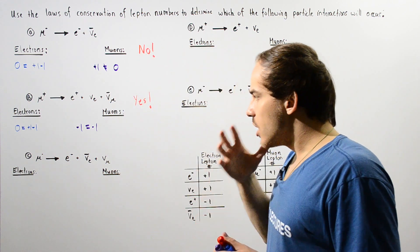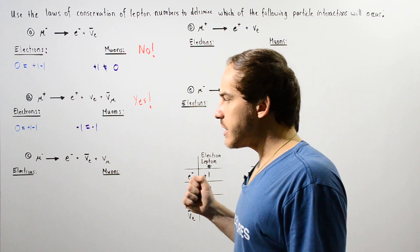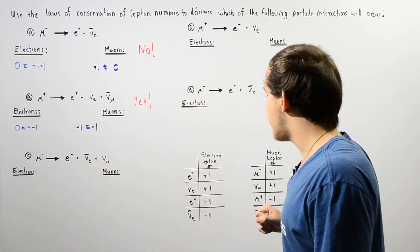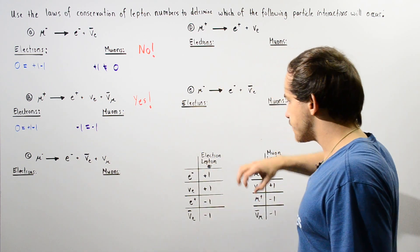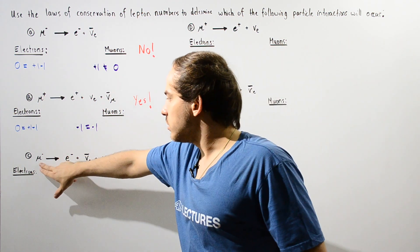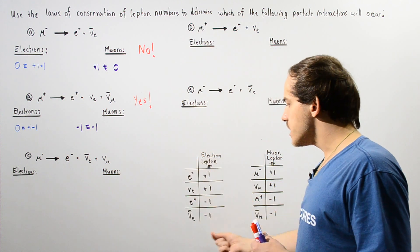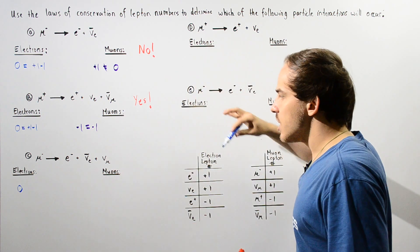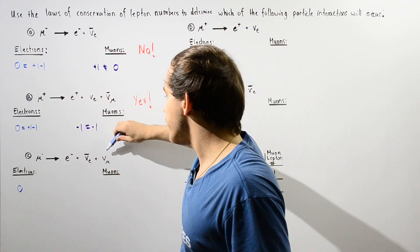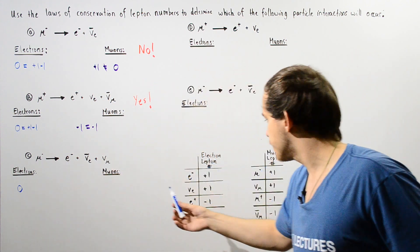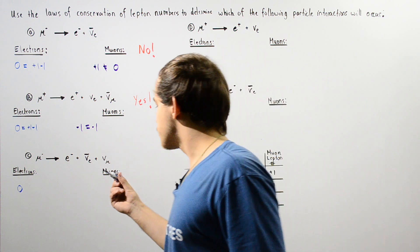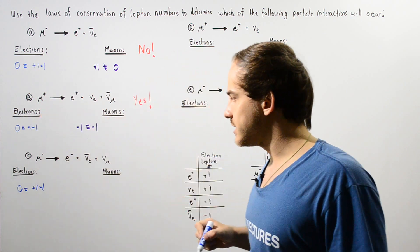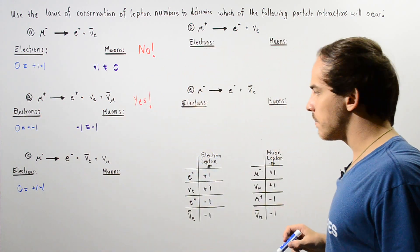What about reaction C? In C, the muon decays into an electron, a muon neutrino, and an electron anti-neutrino. Let's begin with the electron lepton number. On the left side, we have none of these particles, so the left side gets zero. On the right side, the electron gets positive one, the electron anti-neutrino gets negative one, and the muon neutrino gets zero. Since positive one minus one equals zero, the electron lepton number is conserved.